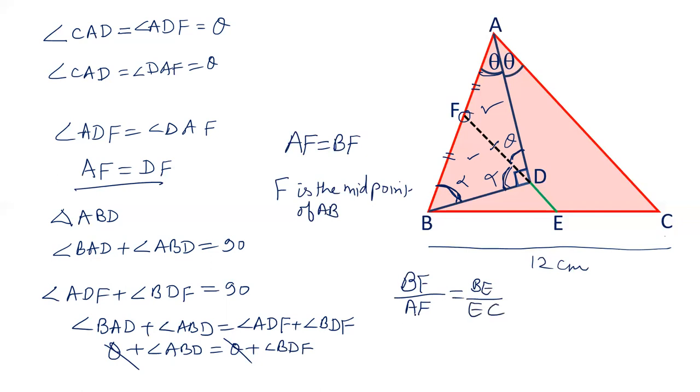We can say that BF upon AF equals BE upon EC. And F is the midpoint, so this can be cancelled out, and this gives us BE equals EC. That is, E is the midpoint of BC. Now we have proved that E is the midpoint of BC, we can say simply that BE equals half of 12, that is 6 cm.